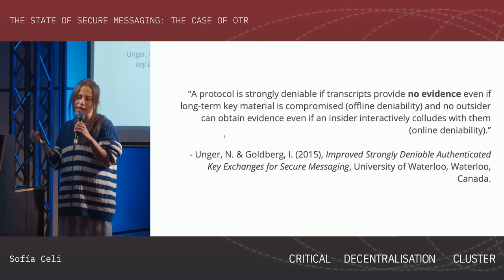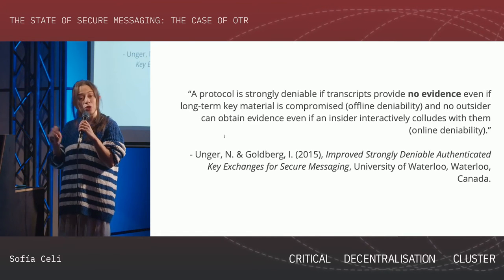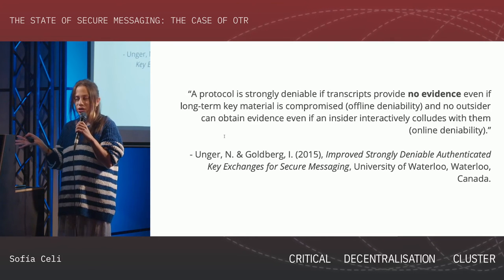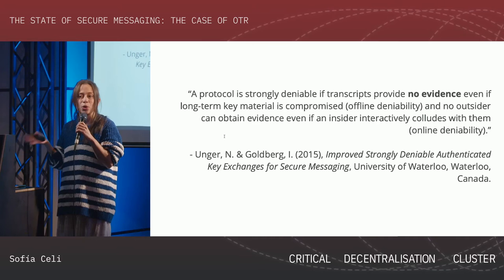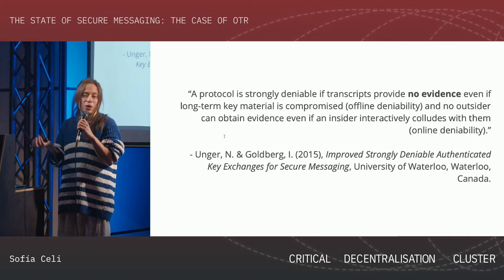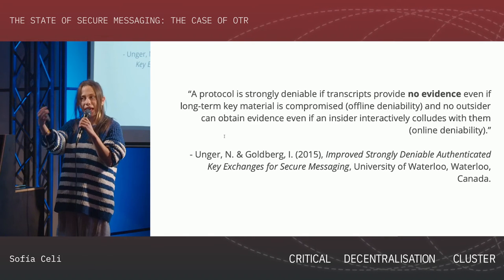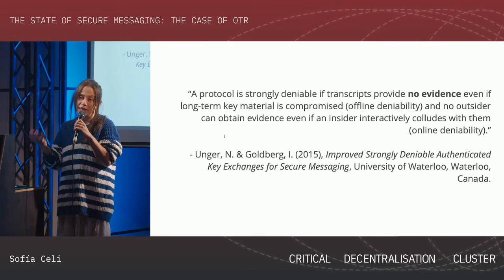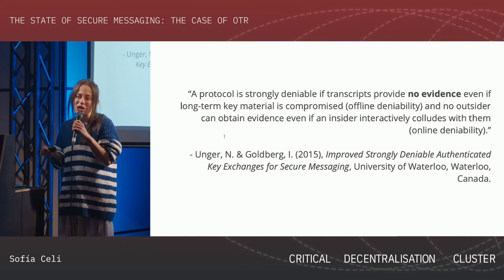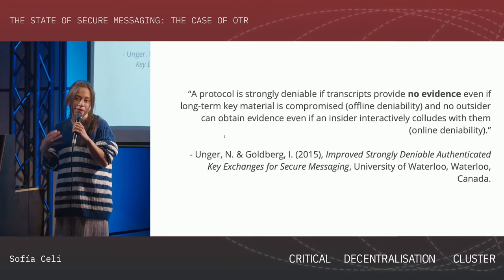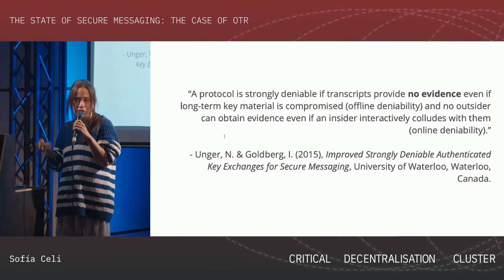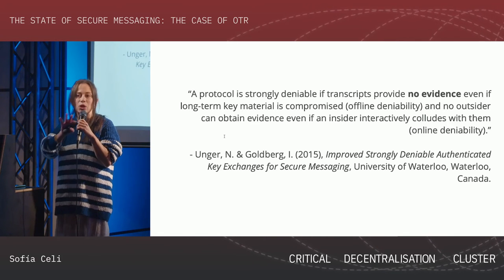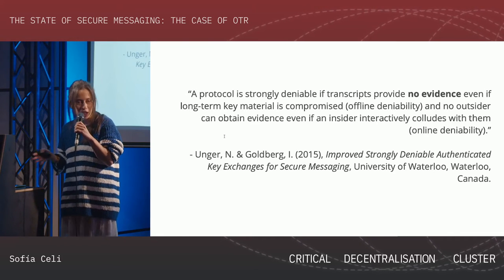But there's another interesting property that maps to the modern world: what if you're crossing a border and an agent says surrender your device, put in your passphrase, and I'm going to start a conversation with your contacts to compromise them? That can actually happen — it has happened to people crossing certain borders. With old protocols you cannot provide deniability in that moment. Modern applications now have online deniability, which means that even if someone is trying to collude with you to compromise your friend, they will not be able to provide any proof of authorship to anybody else.